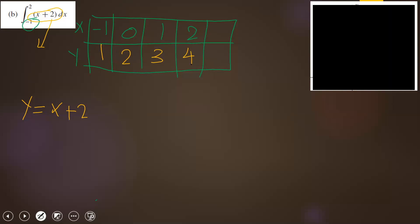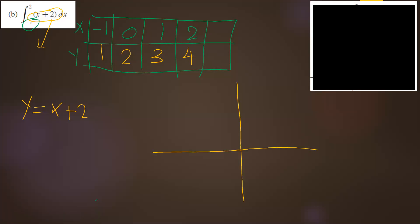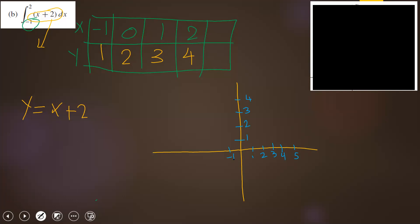So the values are (−1, 1), (0, 2), (1, 3), (2, 4). Let's now graph them. At point negative 1, y is 1 — this is the first point. At 0, y is 2. At 1, y is 3. At 2, y is 4. If you connect these four points, you get a straight line.